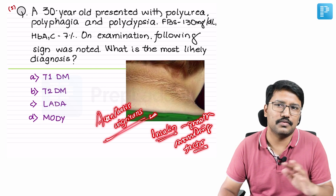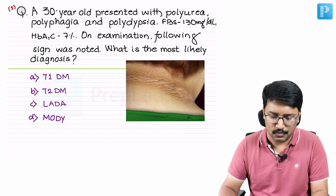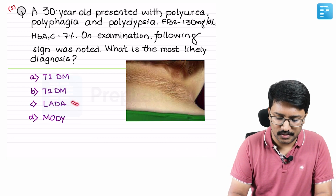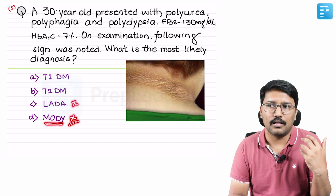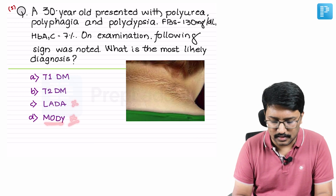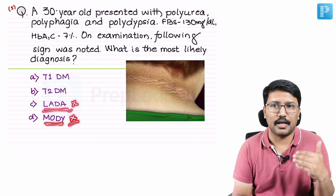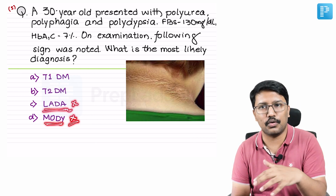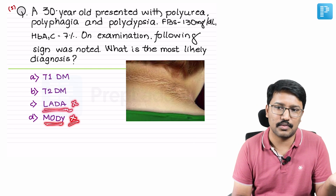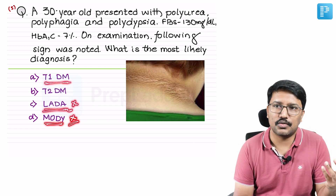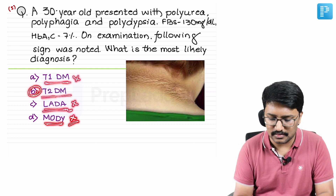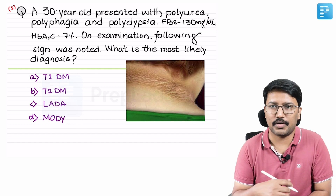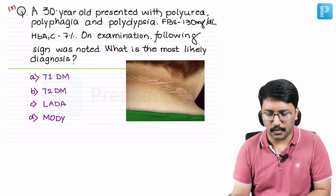Insulin resistance is seen only in type 2 diabetes. It is not seen in type 1, LADA, or MODY. MODY is due to a single genetic defect in glucose sensing or insulin release. LADA is a slow-progressing, late-presenting type 1. Type 1 has absolute insulin deficiency — no resistance. So the right answer is T2DM, where you see insulin resistance, hyperinsulinemia, and acanthosis nigricans.